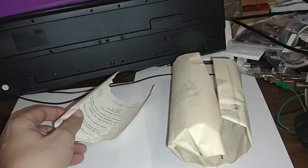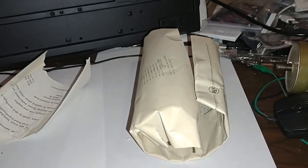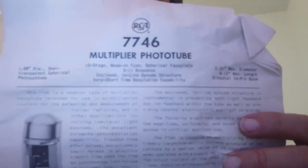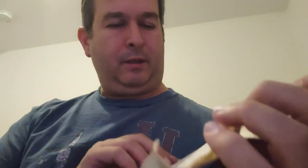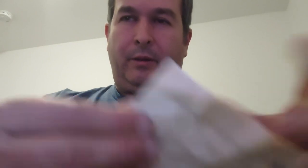Here is, oh my gosh, looks like the pages are getting ripped. These things are so old I don't want to rip them. 7746 multiplier phototube. Very cool, I gotta straighten out these pages, I'll take a better look at this.